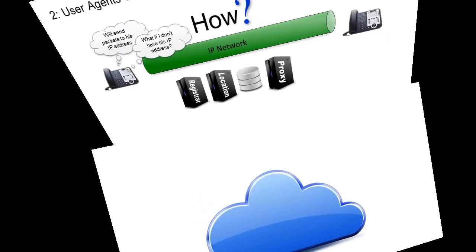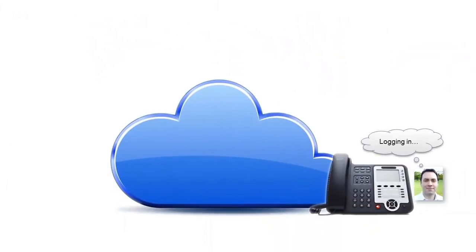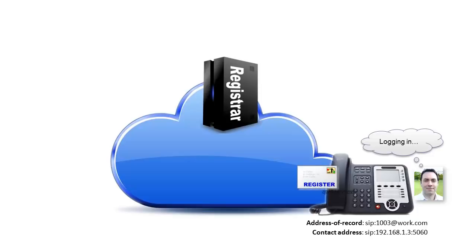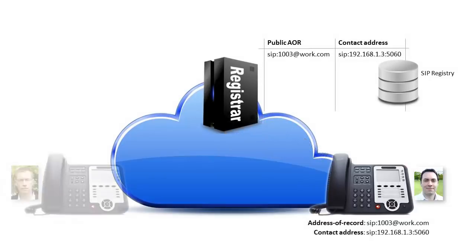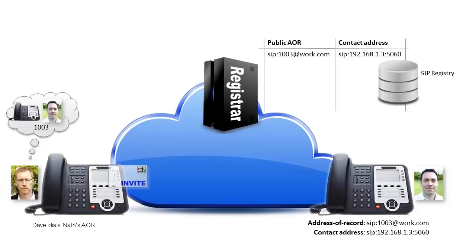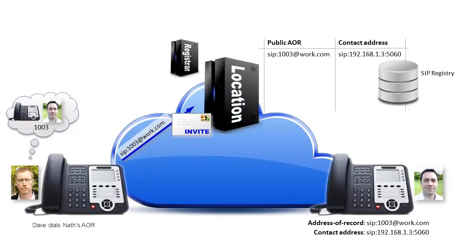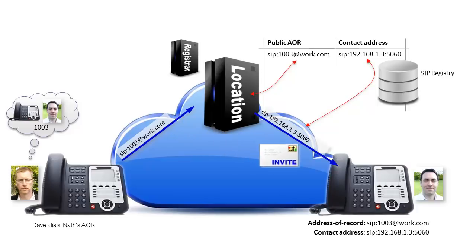Here's how they work. As Nathan logs in, his user agent sends its IP address together with Nathan's public dial address to the registrar service — a core SIP component that takes the two addresses and stores them in the SIP registry, probably a database. Then, when I dial his public address, my user agent sends an invitation signal, not to Nathan's phone — it doesn't yet know its IP address — but to my provider's location service. It then queries the registry, retrieves the dialed party's IP address, and proxies the invite downstream to the phone.